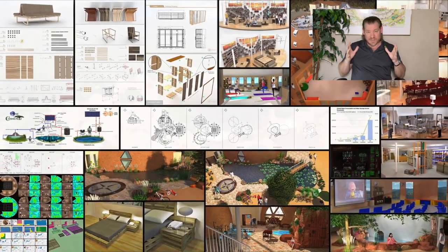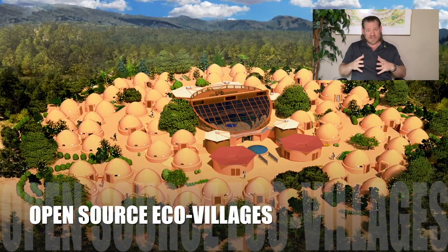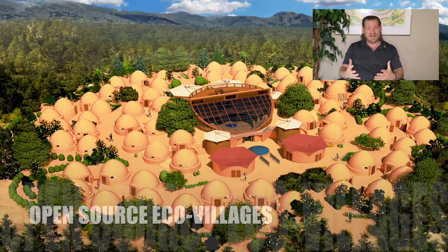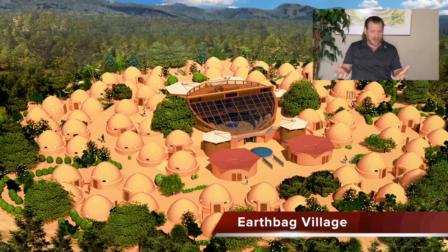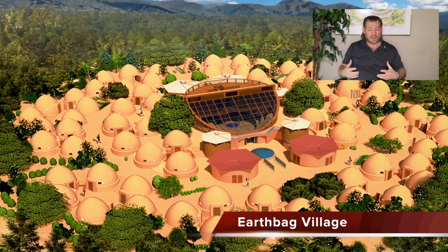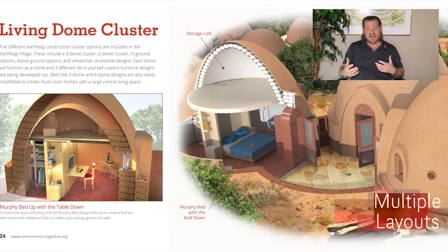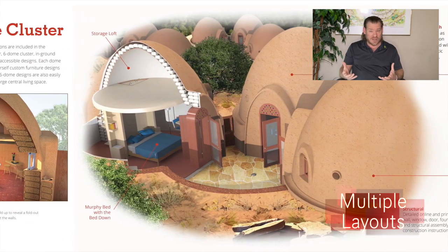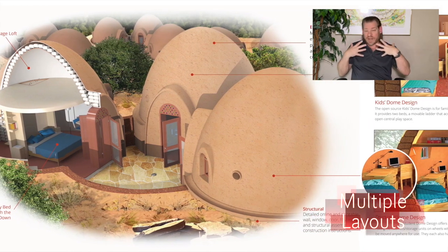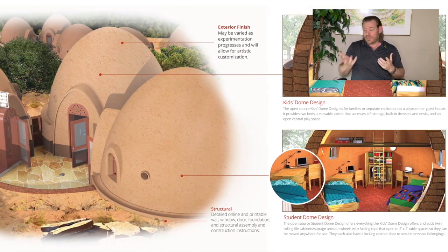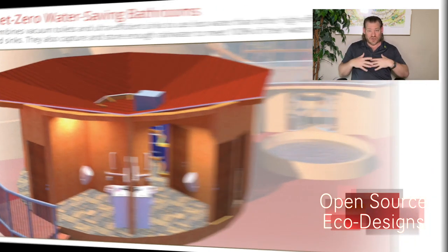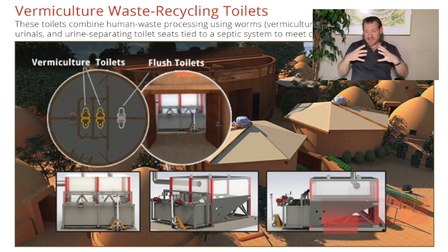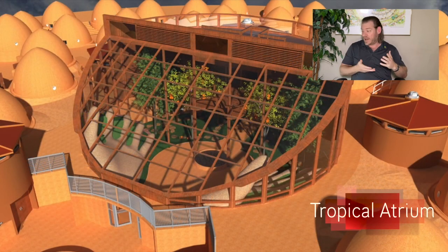Creating a sustainability matrix is about recognizing that all these challenges are not only interrelated, but interdependent, and that putting a band-aid versus a comprehensive solution doesn't make any sense anymore. In a world where we have the ability to globally collaborate and cooperate, we have all the resources and know-how to create solutions and a world that works for everyone. One Community is here to create that sustainability matrix.